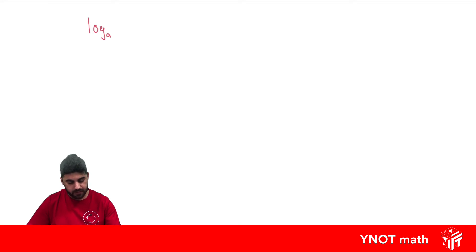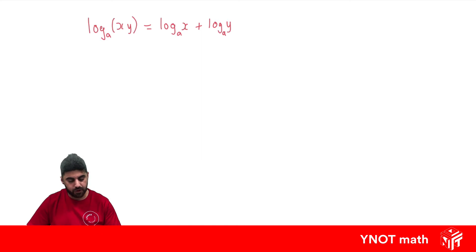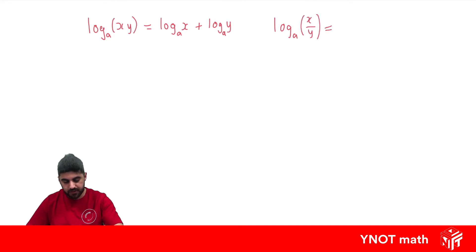If we have the log of a product with some base, it's going to equal the sum of the logs. So we can break up our product into the sum of two different logs. If we have the log of a quotient, that's just going to be the difference of the logs — the log of the numerator with the same base minus the log of the denominator with the same base.